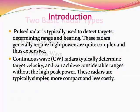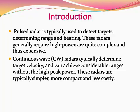One is a pulsed radar wherein a pulse is being used for transmission of the signals and identifying the coordinates of the target with the return signal of this pulse. The second one is the CW radar wherein we continuously send a particular type of waveform towards the target. A pulsed radar is typically used to detect targets and determine the range and bearing or azimuth of the target. These radars are generally quite high power, quite complex and also expensive.